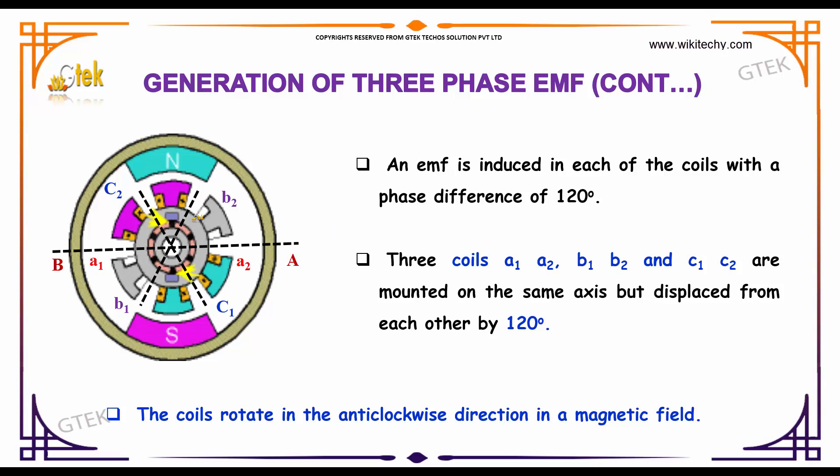Now an EMF is induced in each of the coils with a phase difference of 120 degrees. Three coils A1A2, B1B2, and C1C2 are on the same axis but displaced from each other by 120 degrees. The coils rotate in the anti-clockwise direction in a magnetic field north-south.